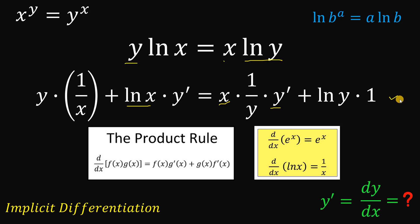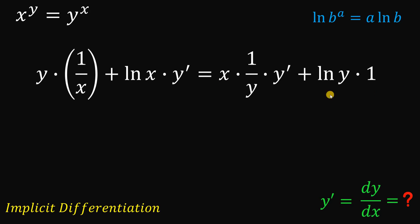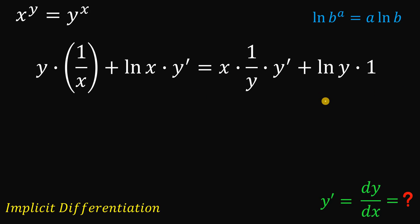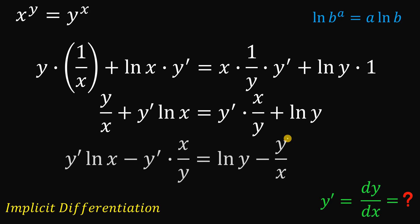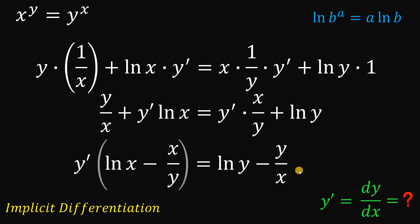Now let's focus on this result and simplify — this is now algebra. First, y times 1 over x is simply equal to y over x. And x times 1 over y times y prime is y prime times x over y. Now, what we're going to do is to rearrange some terms, wherein on the left-hand side we have all the terms with y prime, because what we're going to do is to factor out y prime like this.